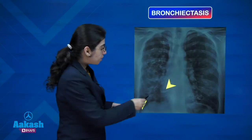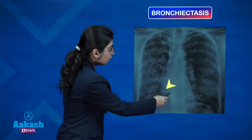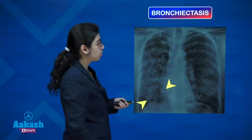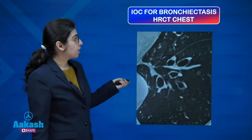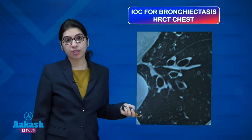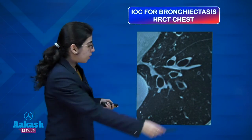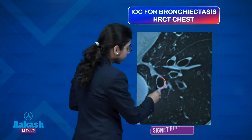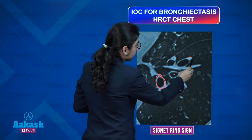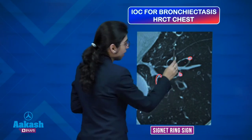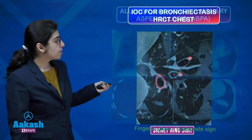Multiple cystic air lucencies filled with air-fluid levels bilaterally suggest bronchiectasis. The investigation of choice is HRCT chest, which typically shows dilated bronchi much wider than the accompanying pulmonary artery, giving the signet ring sign.